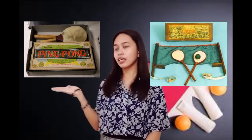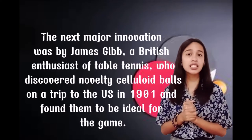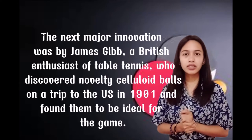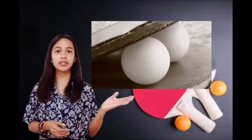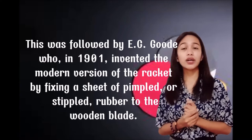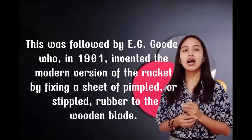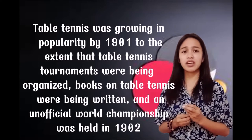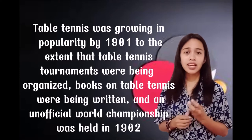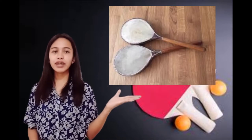Here are pictures showing the Gossima game and the Parker Brothers kit. The next major innovation was given by James Gipp, a British enthusiast of table tennis, who discovered Novotis celluloid balls on a trip to the U.S. in the 1890s and found them ideal for the game. This was followed by Easy Good, who invented the modern version of the racket by fixing a sheet of pimpled rubber to the wooden blade.